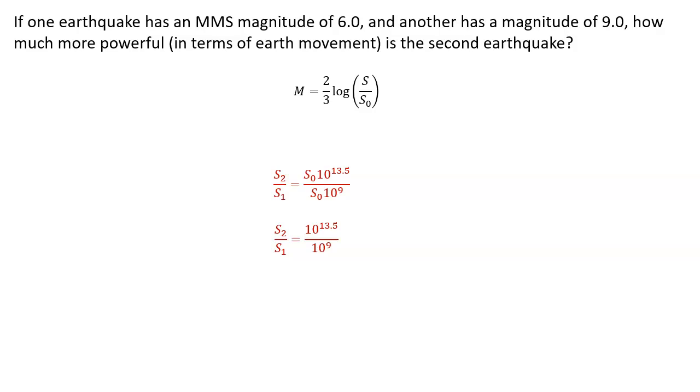So we end up with just 10 to the 13.5 over 10 to the 9th. And that's why I said it doesn't actually matter what the baseline measure is here, because we're looking at the ratio of these two quantities.